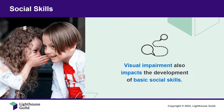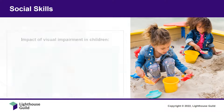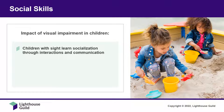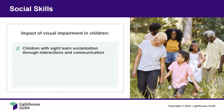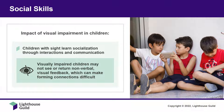Visual impairment also impacts the development of basic social skills. Children with sight learn socialization through interactions and communication with other people. This includes learning to interpret other people's body language, facial expressions, and visual feedback. Think about having a conversation with another person — if you're talking and they react with a frown and look away, that nonverbal feedback is much different than if they are smiling and nodding. Children with visual impairment may not be able to see and return this type of nonverbal visual feedback. They are unable to make eye contact or judge how far away someone is standing in front of them, which can make it difficult to form connections with others. Other people often mistakenly think they are disinterested or unapproachable.